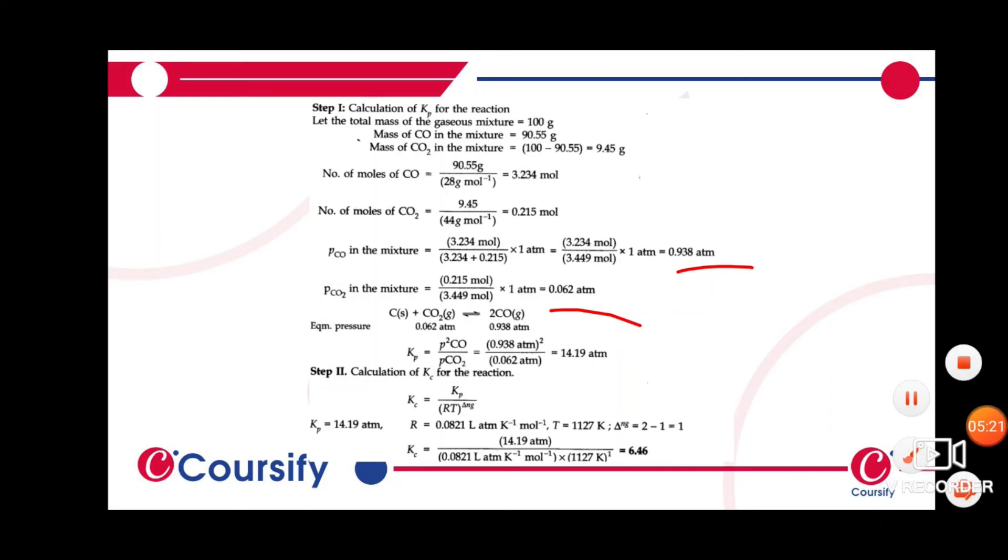Step 2: Calculation of Kc. We use the relationship Kc equals Kp divided by RT to the power delta NG. The value of Kp is 14.198 atm, R is 0.0821 atm per Kelvin per mole, temperature is 1127 Kelvin, and delta NG is the product coefficient 2 minus reactant 1, which equals 1.